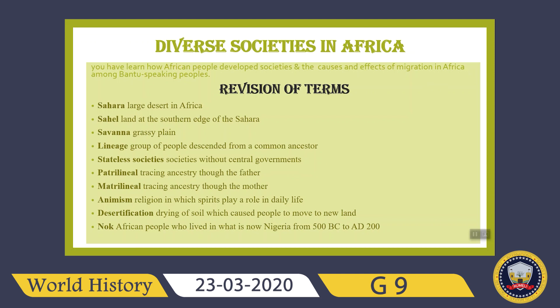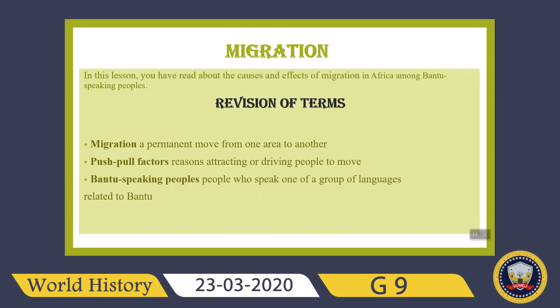Animism is a religion in which spirits play a role in daily life. Desertification is the drying of soil that causes people to move to new land. The Nok are an African people who lived in what is now Nigeria from 500 BC to AD 200. The second lesson of African Civilizations was about migration — the causes and effects of migration in Africa among Bantu-speaking people. Migration is a permanent move from one area to another.